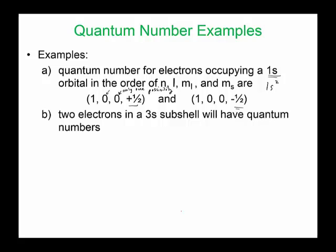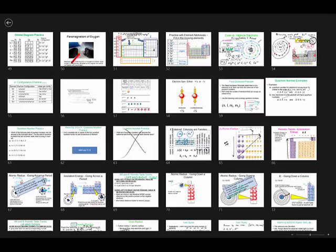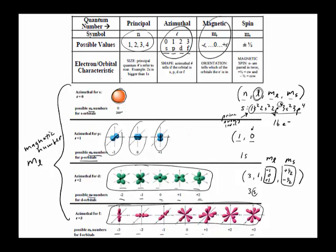Two electrons in a 3s subshell will have quantum numbers where the magnetic number has only one possibility, since it's an s orbital. So going back to the picture, the s orbital only has one possible magnetic number it could be.